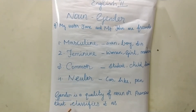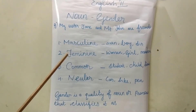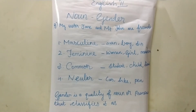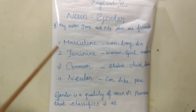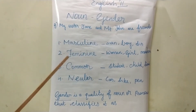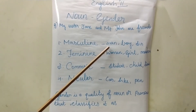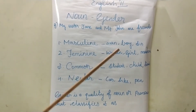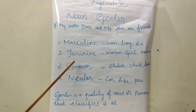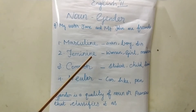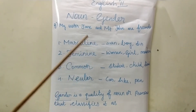What is gender? Gender is a quality of noun or pronoun that classifies it as masculine, feminine, common, and neuter. What do you mean by masculine gender? Masculine gender refers to male — man. For example: man, boy.